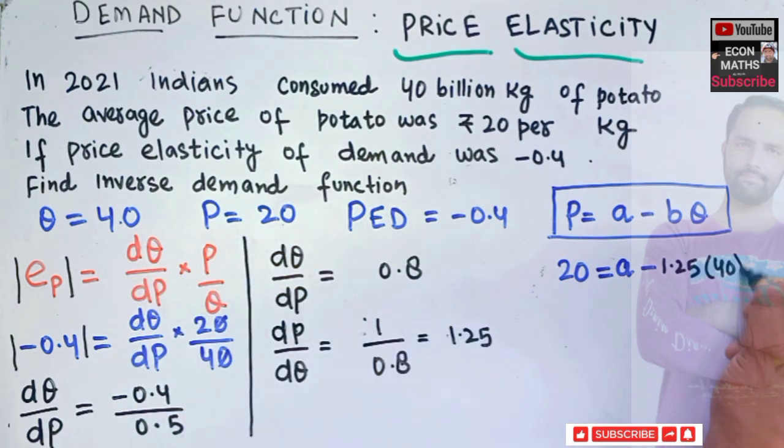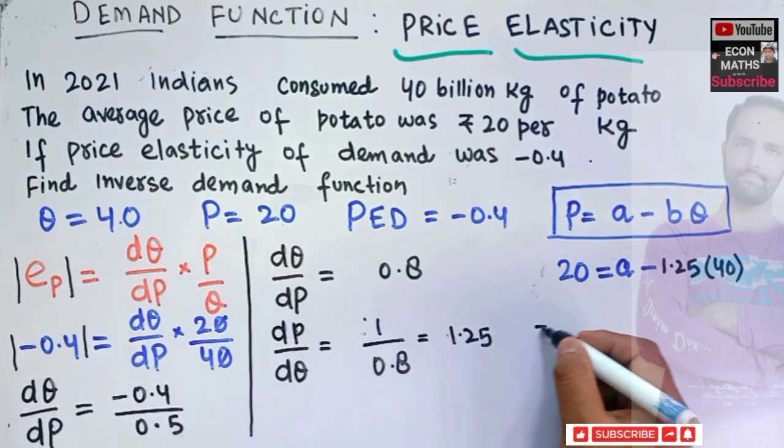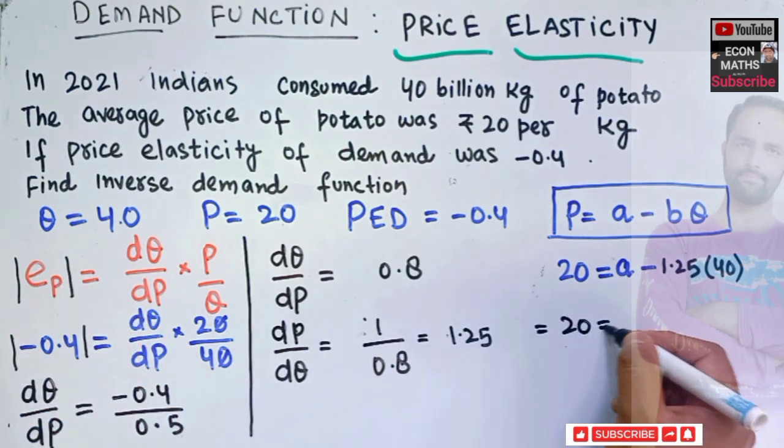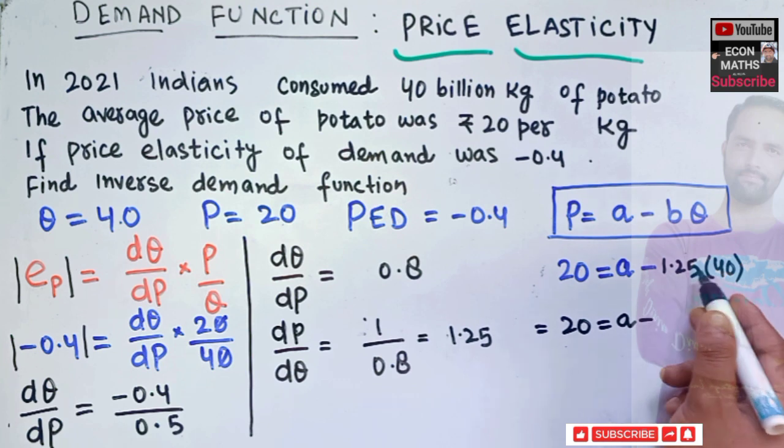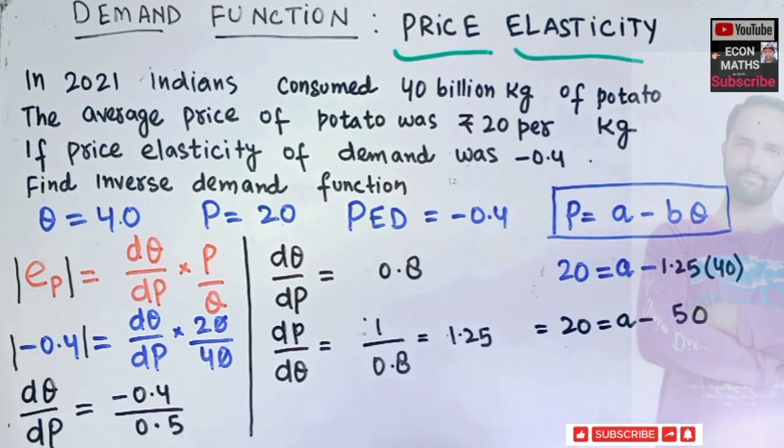Don't get confused, I have just taken the absolute value here. So we have 20 is equal to A minus 1.25 into 40, it will come out to be something like 50. So this is 50 here.